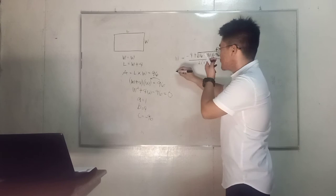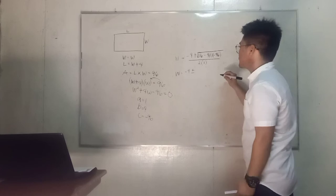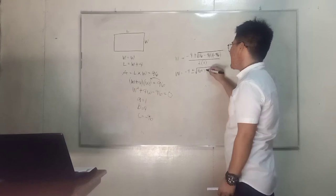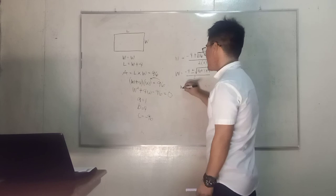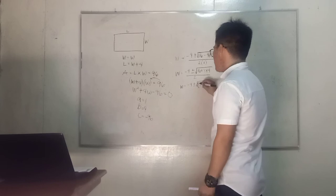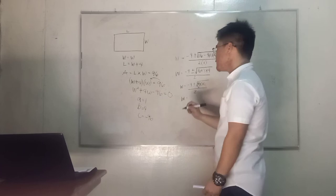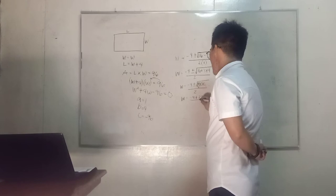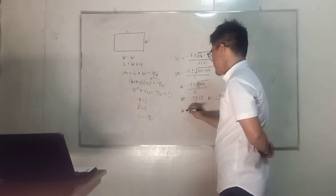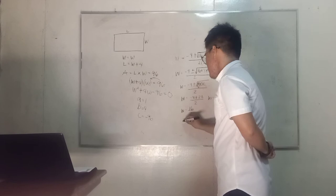It's over 2 times 1. So w is equal to negative 4 plus or minus the square root of 16 plus 384, all over 2. We have negative 4 plus or minus the square root of 400, all over 2. So our w is negative 4 plus or minus 20 all over 2. So we have w here, the value of w here is 16 over 2, which is equals to 8.